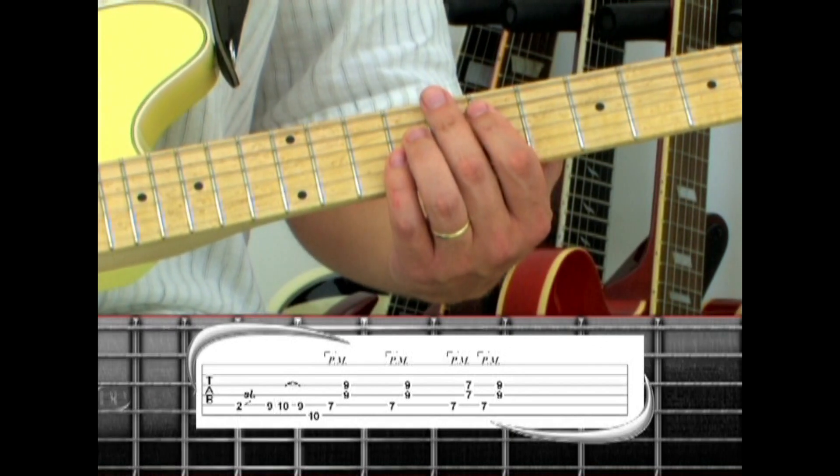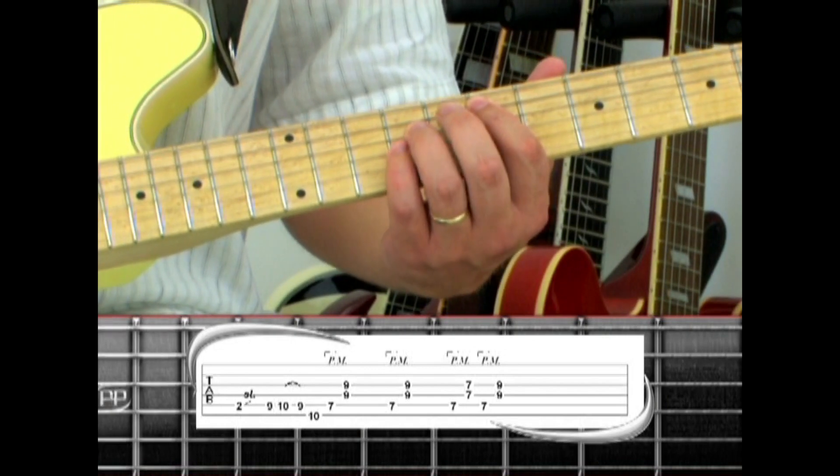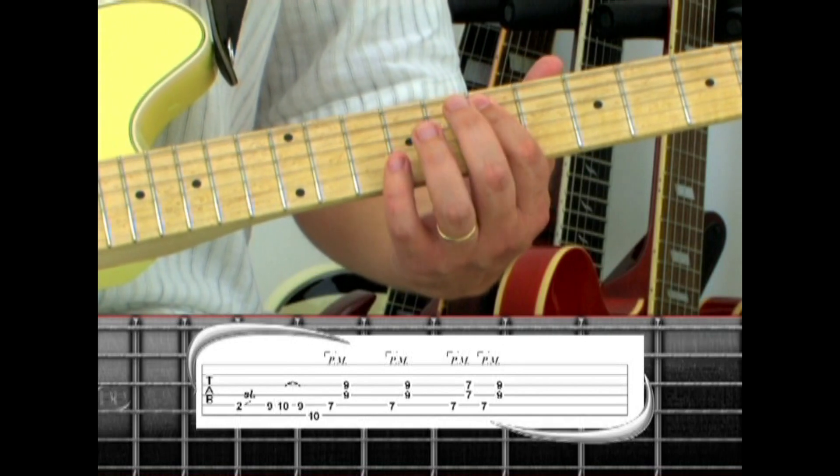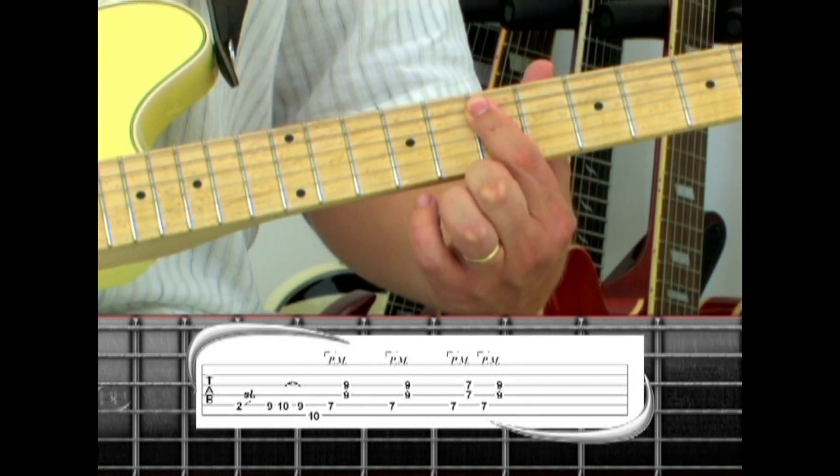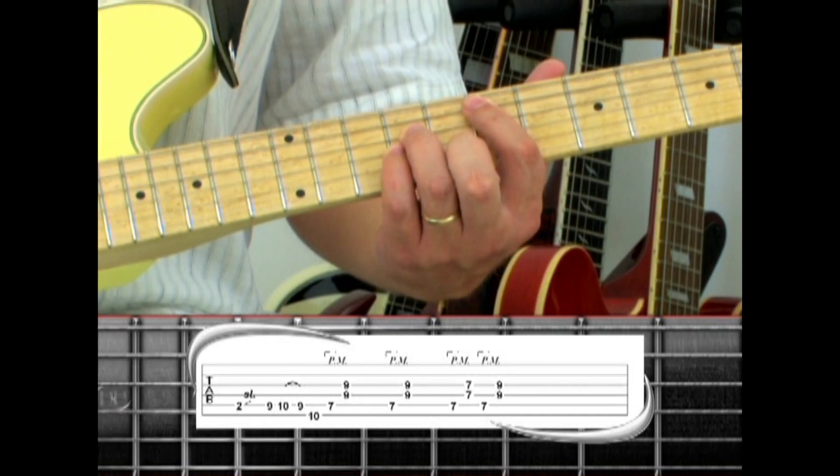Instead of picking the full chord, palm-mute the 5th string, then play the rest of the chord. Repeat, play the palm-mute again, then lift the ring and pinky to play the barred 7th fret. Palm-mute, then return to the E5.